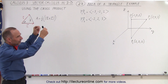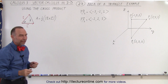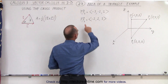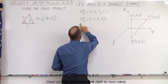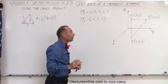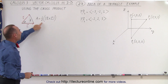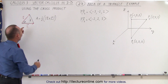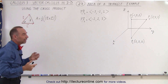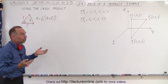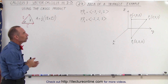This triangle is not exactly in the YZ plane — it could be oriented in any given direction. Notice that I've defined two vectors: the vector from point one to point two, and the vector from point one to point three. From a previous video we realized that the area of a triangle can be found by taking one-half times the magnitude of the cross product of any two sides of the triangle.